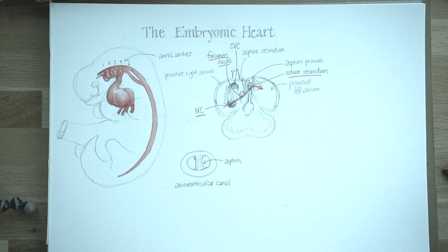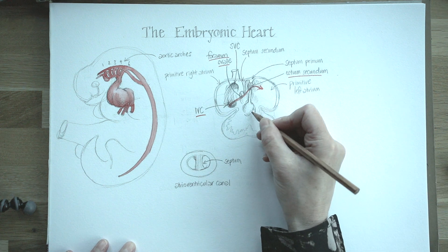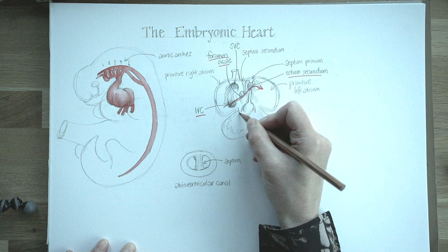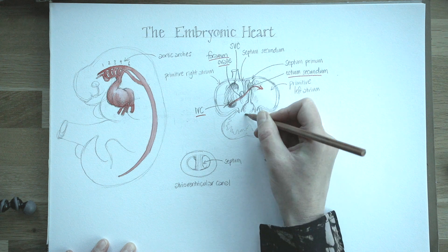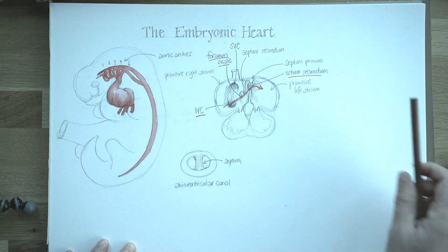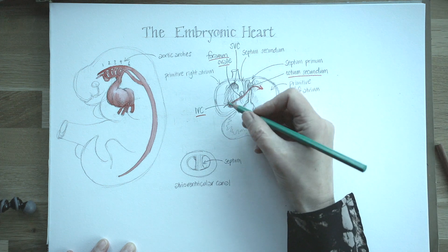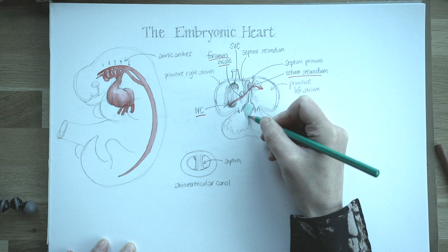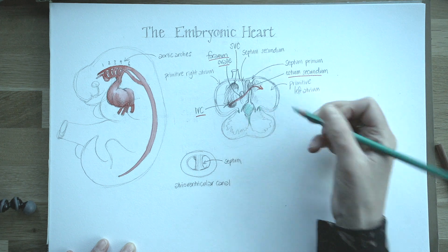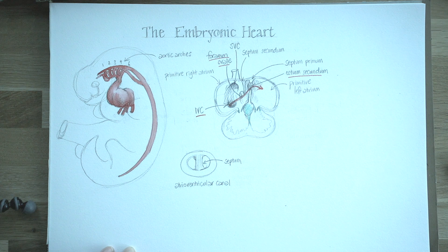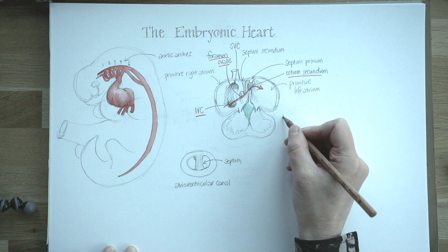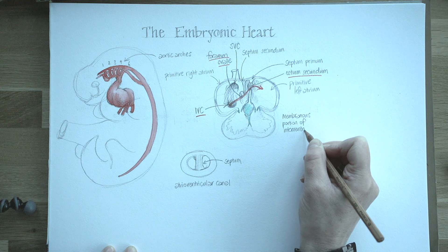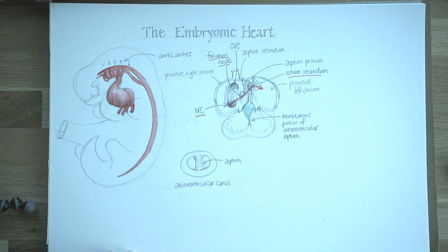Let's focus again on that tissue in the middle of the atrioventricular canal, because it's contributing to the development of the valves between the atria and the ventricles — the mitral valve on the left and the tricuspid on the right. That tissue, coloured green, is also growing down in the centre to meet the muscular interventricular septum, forming a more sheet-like membranous part of the interventricular septum.